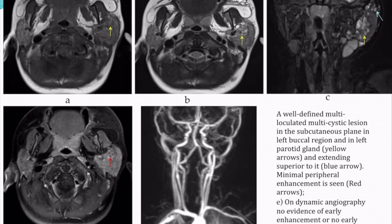Axial and coronal MRI and angiography sequences showed a well-defined multi-loculated cystic lesion in the subcutaneous plane of the left buccal mucosa involving the left parotid gland. Minimal peripheral post-contrast enhancement was seen on dynamic angiography, with no evidence of early enhancement or early draining vein. The diagnosis given was slow-flow lymphatic malformation.